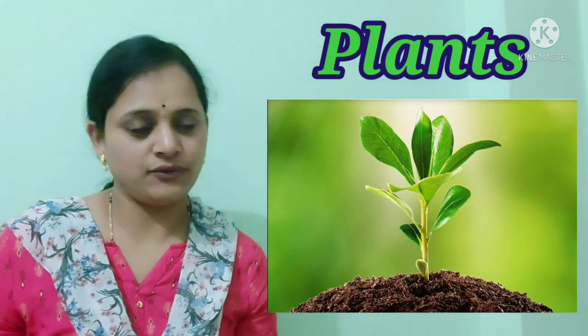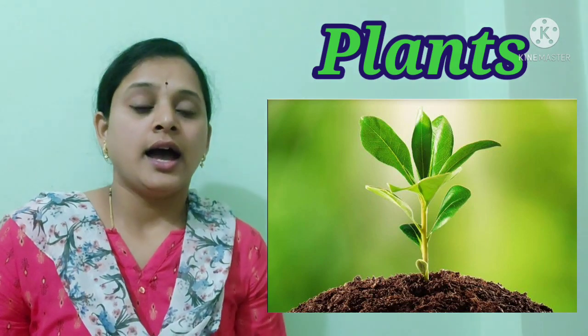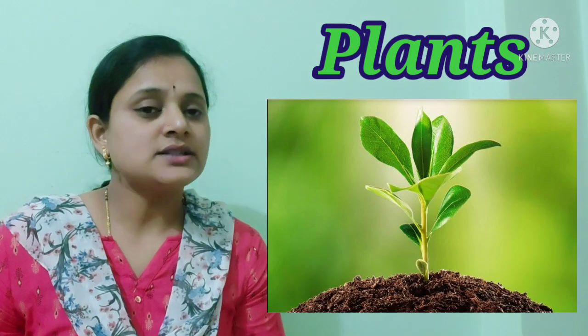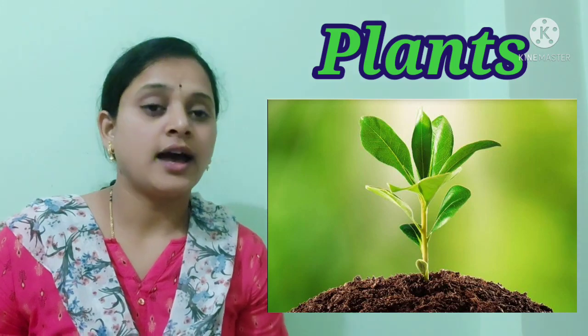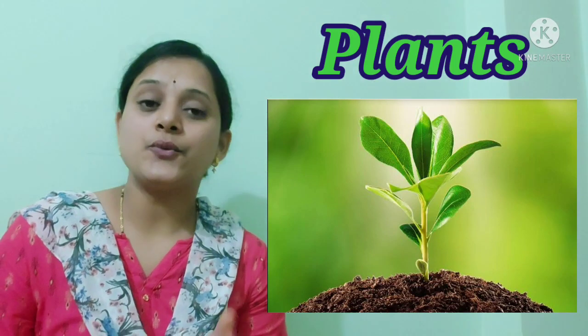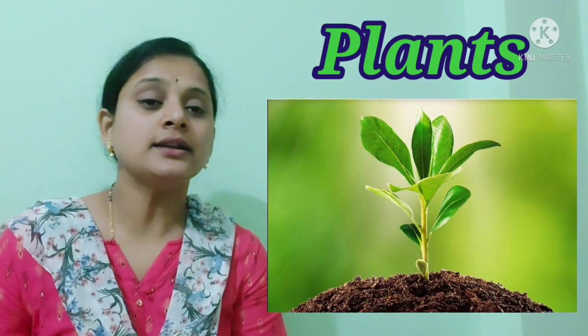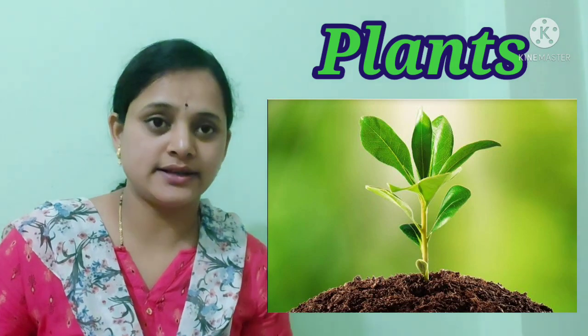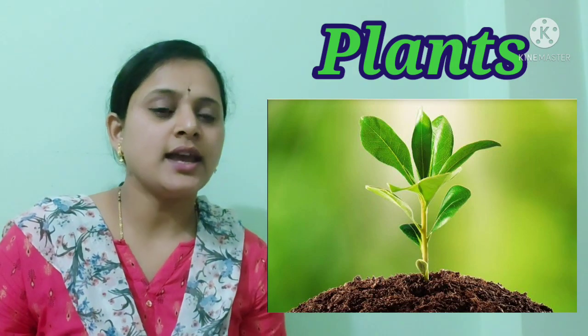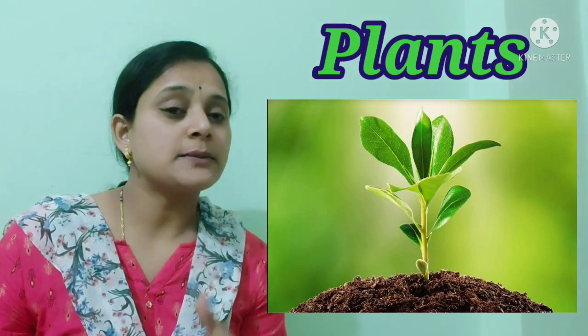Plants use a little amount of food to survive and the rest of the food is stored in different parts of the plant. Let us see which parts plants store their food in, which we use as vegetables and fruits. Let us see in this chart.